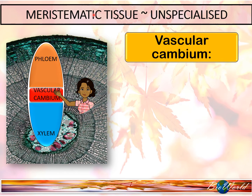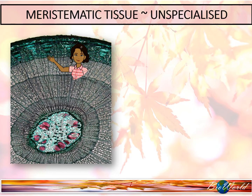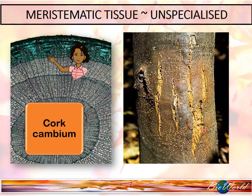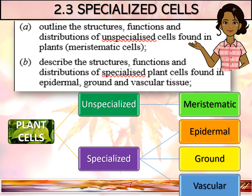Since the vascular cambium is a meristematic tissue, it is able to do mitosis to produce secondary phloem and secondary xylem. These secondary tissues are necessary to help increase transport and support for a bigger plant. The second type of lateral meristem is the cork cambium. The cork cambium only forms when the epidermis of the plant is damaged. Since it is meristematic, it will start to do mitosis to form a new layer called the periderm, which will replace the broken epidermis. That concludes our discussion on the unspecialized meristematic cells.